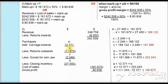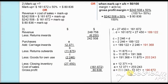Now knowing B, we have A plus $12,371 equals B ($203,243). Taking $12,371 to the other side, it becomes minus, so A equals $190,872. This is our purchases figure. Now we know all the missing values.